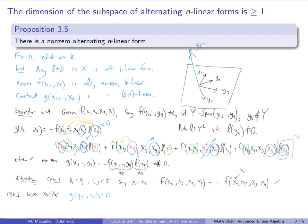It's also worth thinking about where this construction fails: it would fail if we tried to go beyond n, producing an (n+1)-linear alternating form, because no such non-zero form exists. Somewhere in the argument we assumed 4 < n to continue the induction. This is a proof sketch rather than a fully rigorous proof, but all the basic ideas are here.